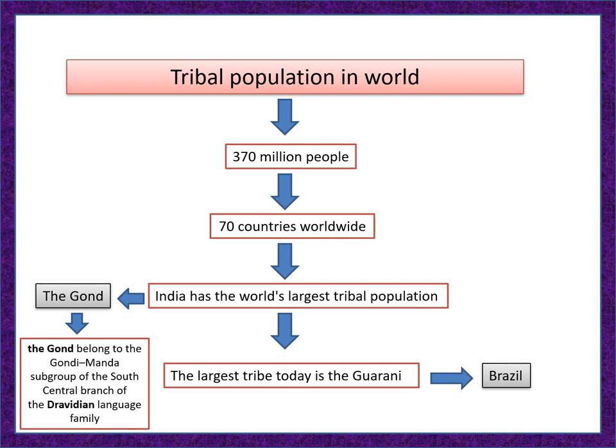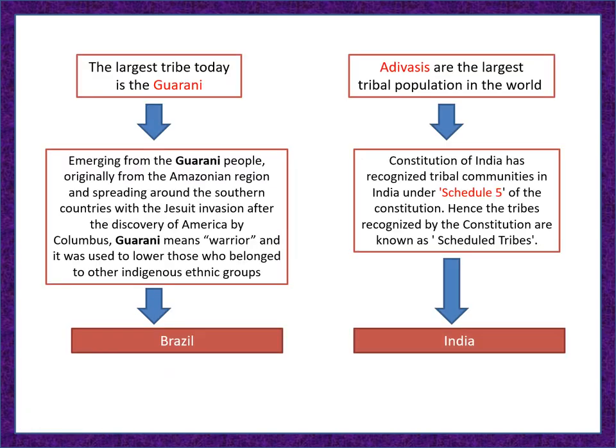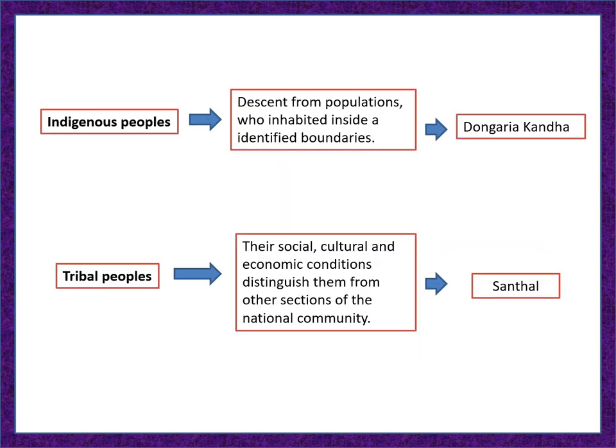Regarding tribes — tribes are an important part of ethnobotany. The tribal population in the world is 370 million people across 70 countries worldwide. India has the world's largest tribal population, including the Gond, and Brazil has the Guarani. The Guarani here is the Adivasi. The Constitution of India has recognized tribal communities under Schedule 5, hence the tribes recognized by the Constitution are known as Scheduled Tribes. Indigenous people descend from populations who inhabited identified boundaries, like the Dongria Kondh. Tribal people's social, cultural, and economic conditions distinguish them from other sections of the national community, like the Santhal.